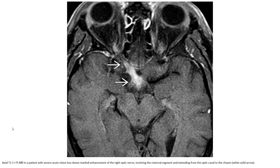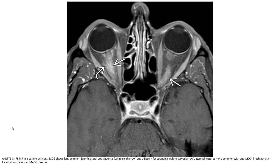In the case of anti-MOG associated disorder, MRI shows a long signal and wide involvement of the optic nerve sheaths, with adjacent fat stranding — a typical feature more commonly seen with anti-MOG. Pre-chiasmatic location is also a feature of anti-MOG disorder.